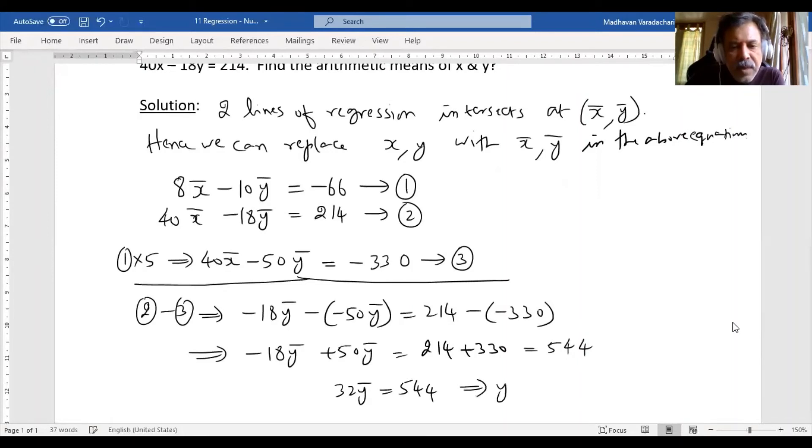So Ȳ will be 544 divided by 32, which equals 17.